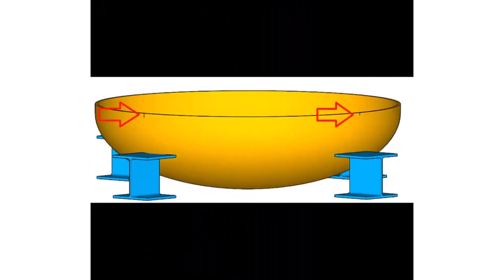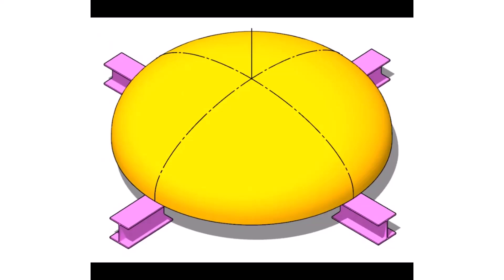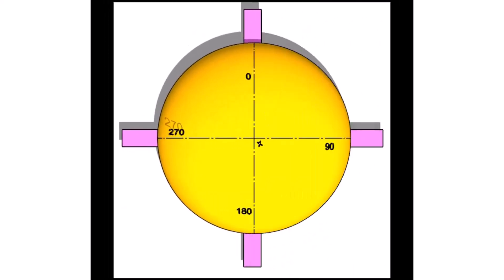Divide the circumference of the dish end into minimum four equal parts. Now, put the dish end upside down and level. Draw lines through the center, connecting the previously marked points. Mark the 0, 90, 180 and 270 degrees.